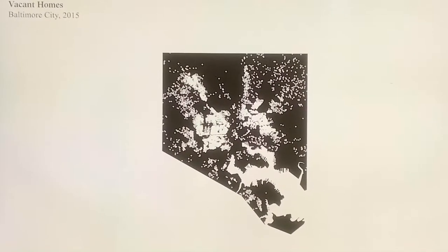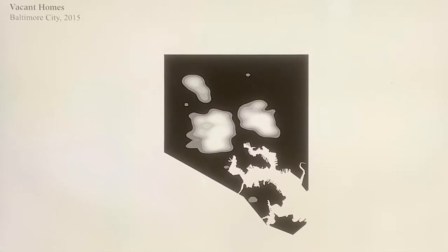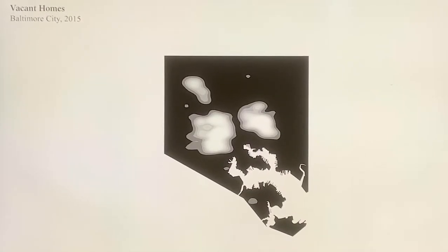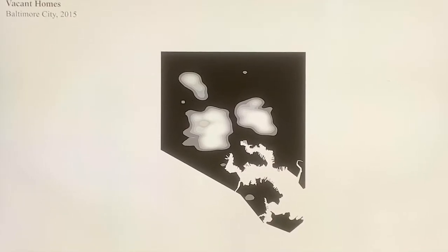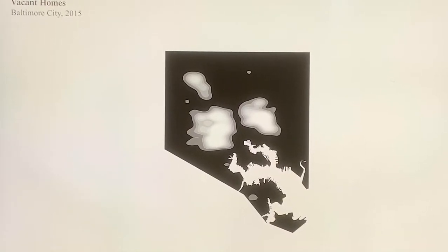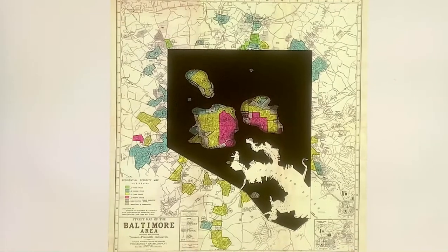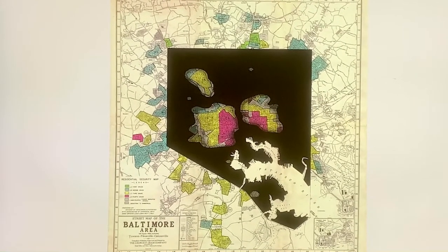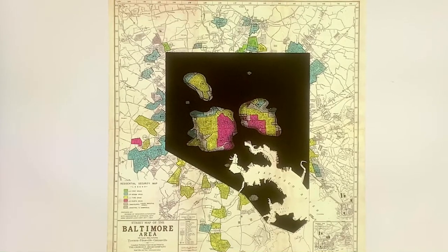A 2015 survey map of vacant homes, graded for density. Transparent areas indicate regions with the highest concentration of vacant homes. The same map layered over the 1937 residential security map.